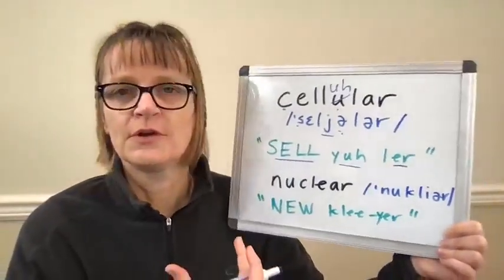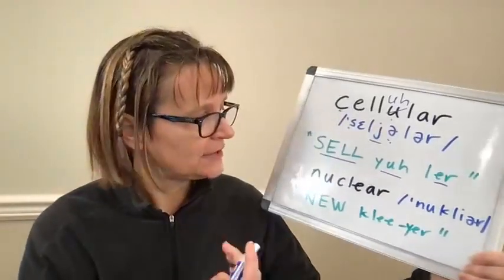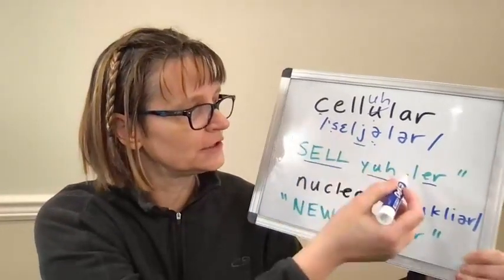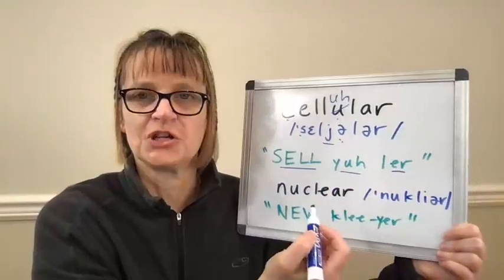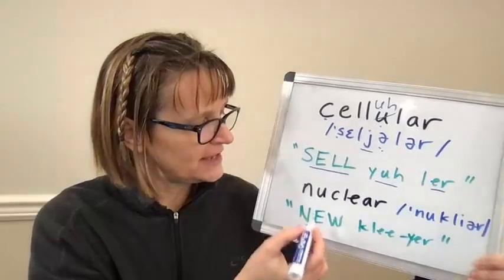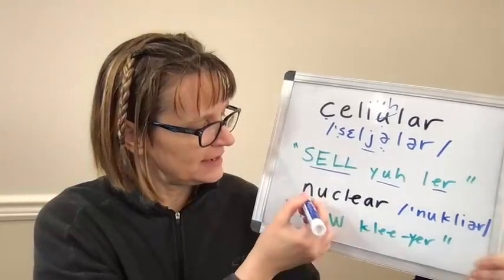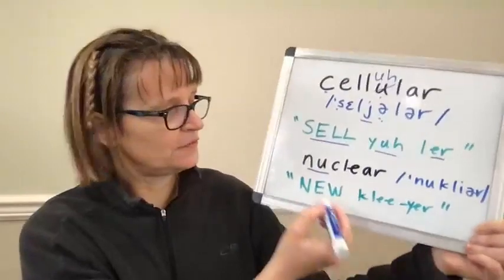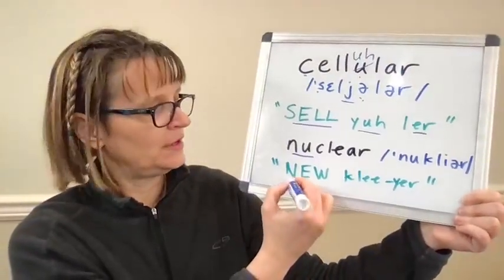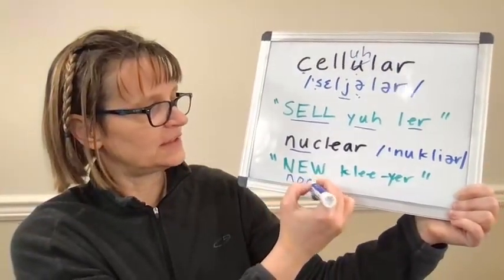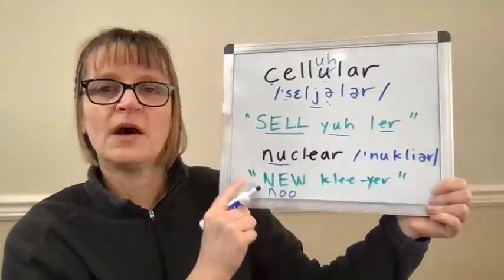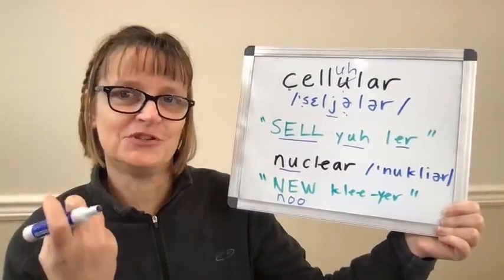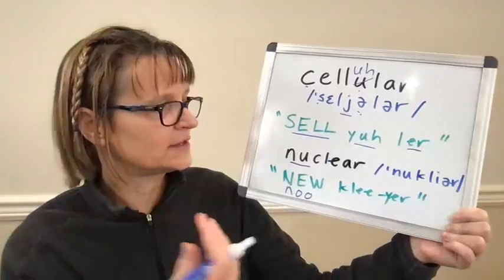Looking at the word 'nuclear,' we don't have that same y-l-r pronunciation in it. Instead, at the beginning the letter U says the 'OOO' sound — I've written it here like the word 'new.' We don't want 'new' here; that would be more British English to say 'new' versus 'new' in American English.